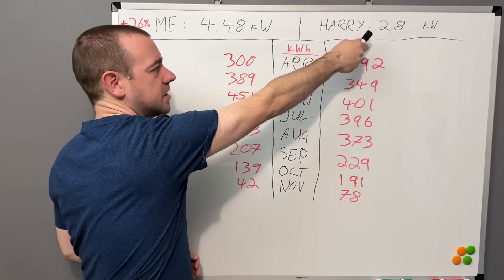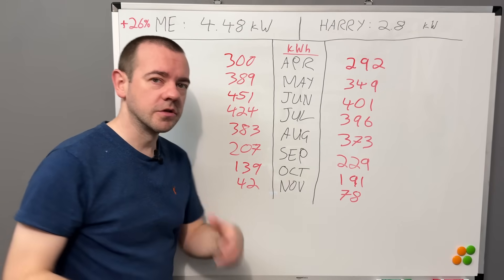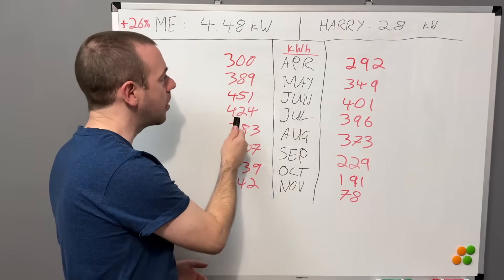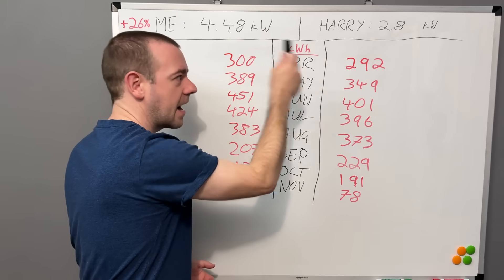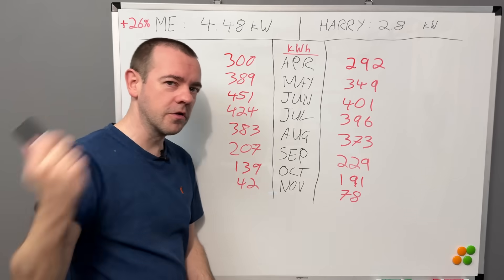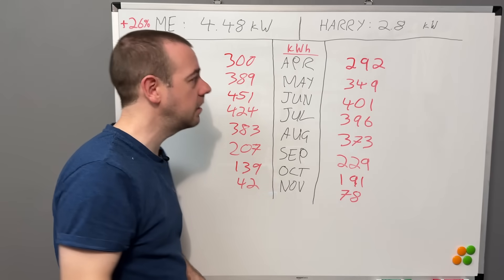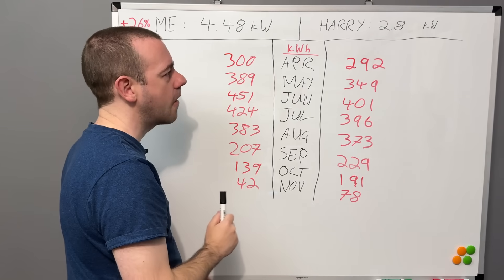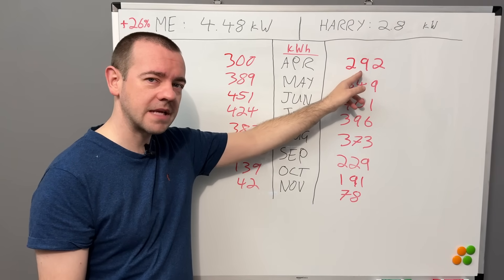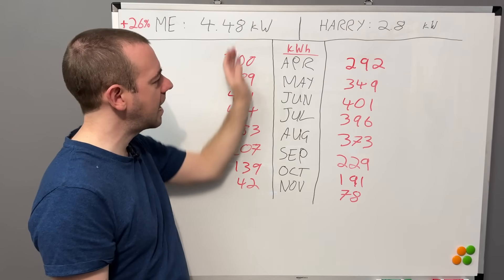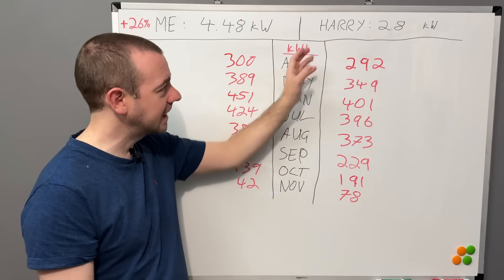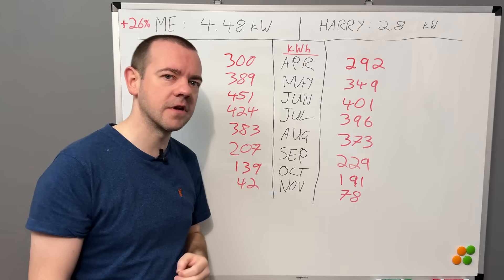Simply put, in summer I should outperform Harry, but for all the other eight, nine, ten months of the year he should panel by panel generate more. I'm generating in April almost the same as Harry, but I should be way ahead. So panel by panel, clearly he's at a significant advantage.